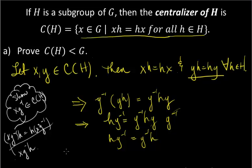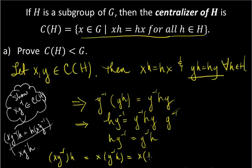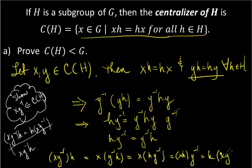Now I can write: XY inverse H, by the associative property, I can commute Y inverse with H — so that's X times H times Y inverse by what we just proved — and now XH equals HX, so I have H times XY inverse by the associative property. So we just showed that XY inverse commutes with H for all H in the group.